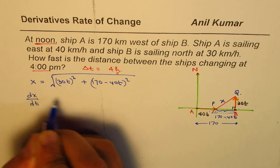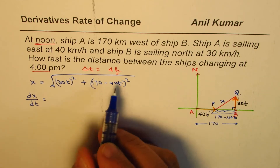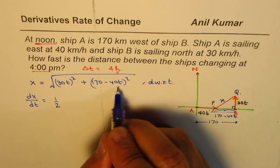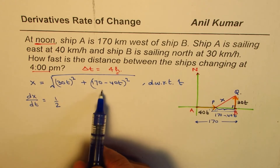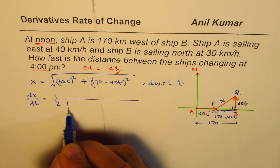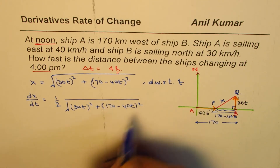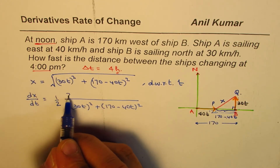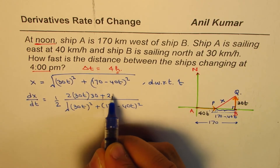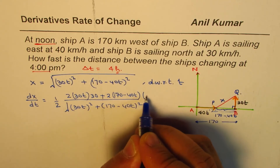We need to find dx/dt, the rate of change of this distance. Differentiating x with respect to t using the chain rule on the square root function, we get: dx/dt equals one over (2 times the square root of (30t)² plus (170 minus 40t)²), multiplied by 2 times 30t times 30, plus 2 times (170 minus 40t) times negative 40.